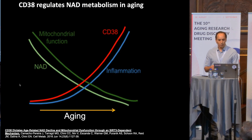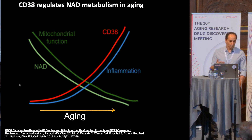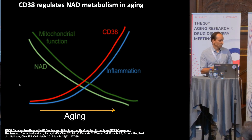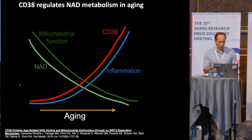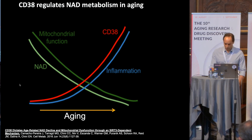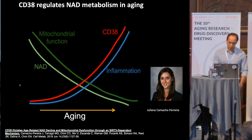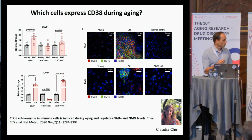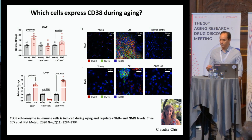We published almost 10 years ago a paper in Cell Metabolism demonstrating that during the aging process, this NAD decline was caused, at least in part, by accumulation of CD38-positive cells. This was published by Juliana Camacho, who now has her lab in Brazil. We followed up with the question: which cells accumulate CD38 during aging?